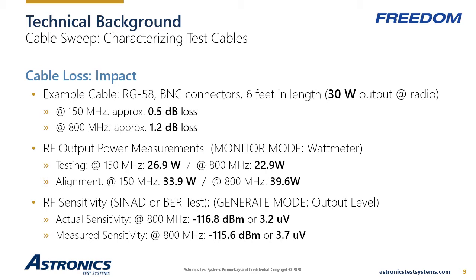Take a minute to let the magnitude of this error sink in. A more subtle consequence of cable loss comes when trying to measure the sensitivity of the radio's receiver. The weak signal generated by the test equipment is attenuated before it reaches the radio, so the radio will appear to be less sensitive than it really is. In this example, the sensitivity will appear worse by 1.2 dB at 800 MHz, which is equivalent to half of a microvolt. Again, this may lead to an incorrect diagnosis of a sensitivity problem that is only caused by cable loss. Once the true impact of cable loss is understood, the need to compensate for it becomes very clear.